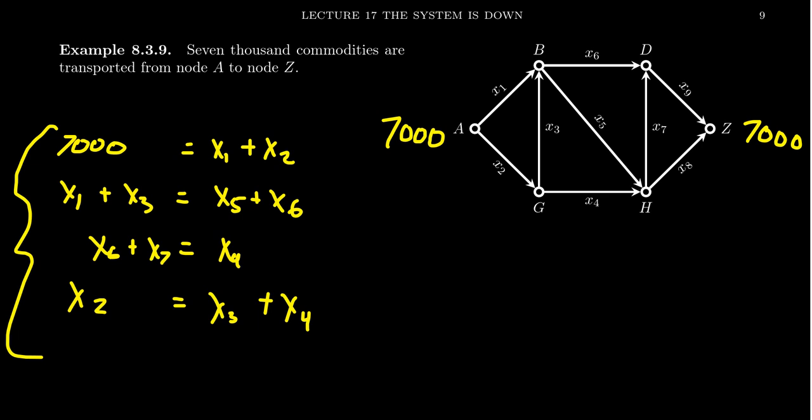All right. We just did G. Let's now do H. H has input from X4 and X5. And it has output to D via X7 and then to Z via X8. And then finally, let's do vertex Z. Z has input from X8 and X9. And then in the end, there should be 7,000 commodities that end up at Z because they don't go anywhere, right? They stay put.